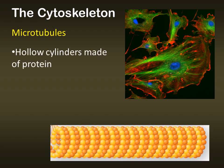Microtubules are hollow cylinders of protein. You can see here that all of the individual peptides that make up the microtubules are folded into a helical structure — hollow in the center and rounded like a cylinder.